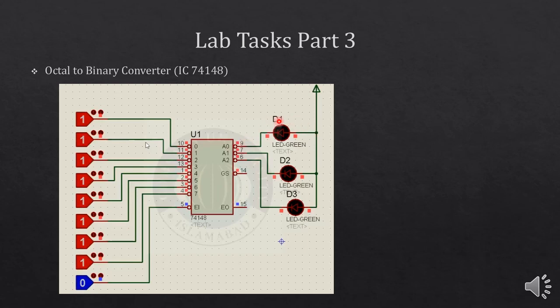When the output is high, since it is working on active low logic, the output will be 0. The LED will have 0 at the cathode and will get voltage from the anode side, so the LED will glow. When the output is high, there will be the same potential at both ends of the LED, so it won't glow. Practically, when working on the breadboard, you have to connect a 330 ohm resistor to limit the voltage drop across the LED.